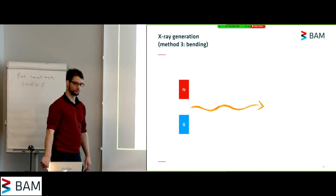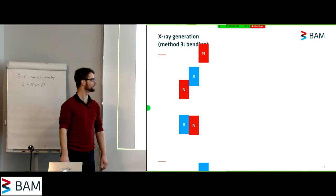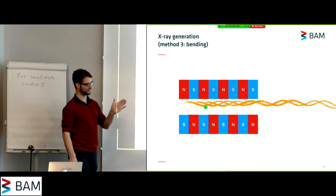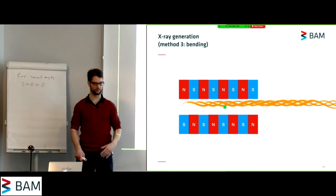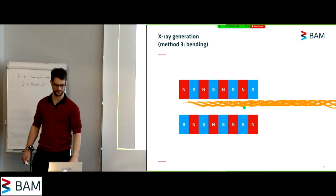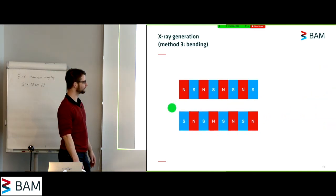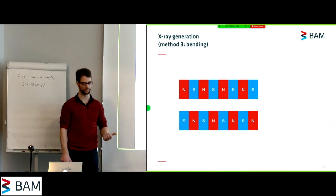But hey, if you can do it once, you can do it multiple times. And in that case, every time you can make your electron go in a wavy fashion, and every time it bends, it will add intensity to this. So this wave X-ray generation is called a wiggler, and you add intensity with every bend.